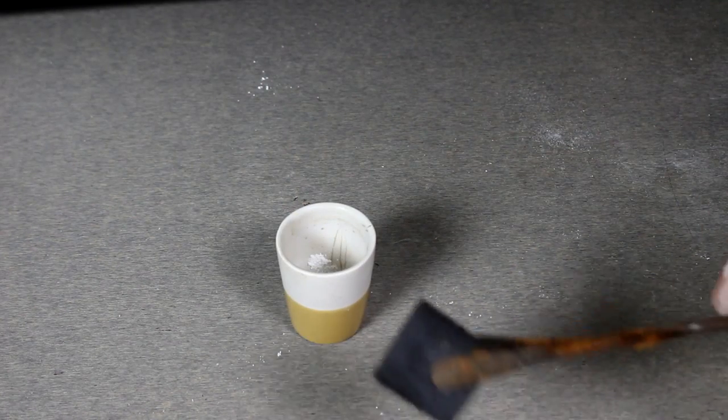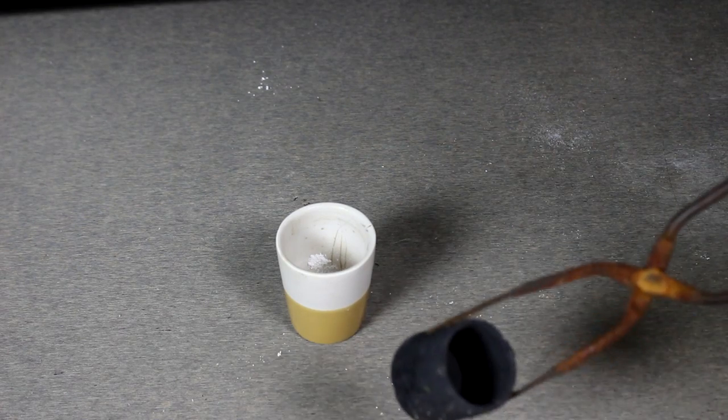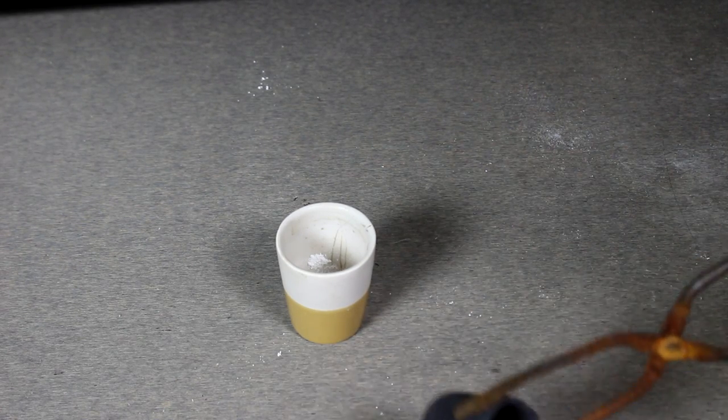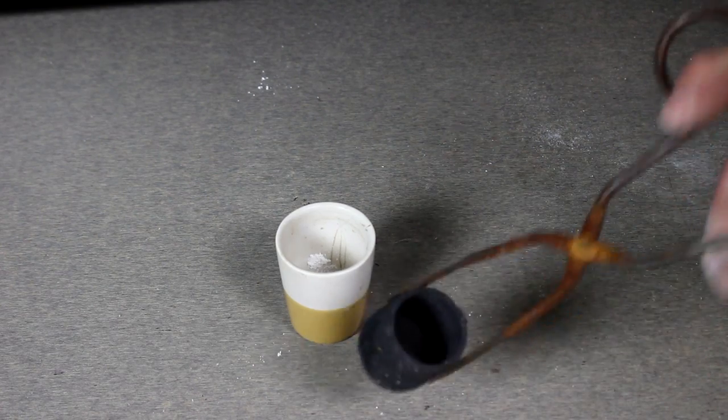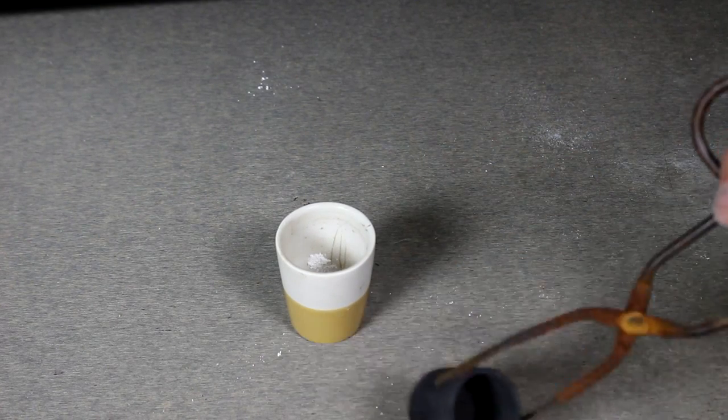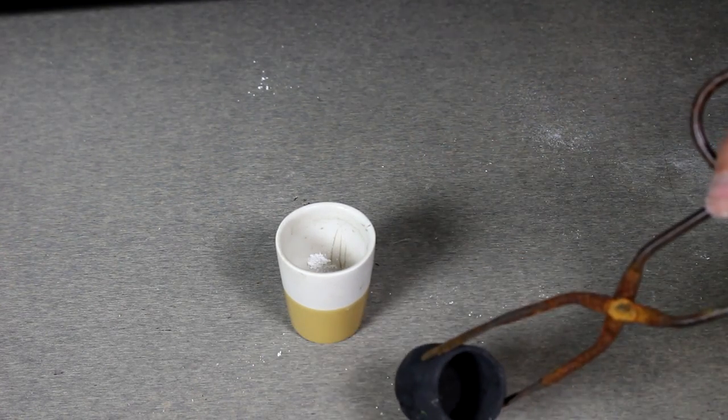I of course can't use a graphite crucible because the graphite will dissolve into the glass with carbon resulting in a product which is black or some off color, which is not really what I want.